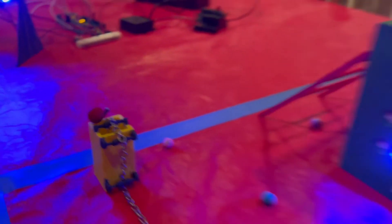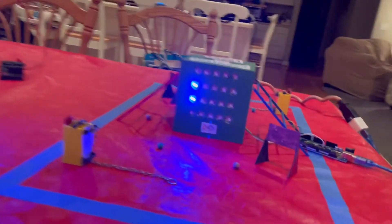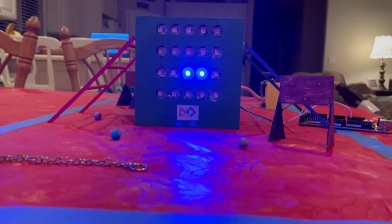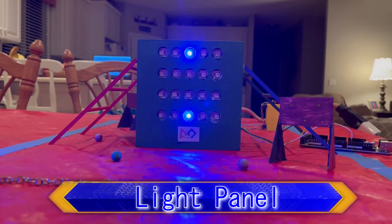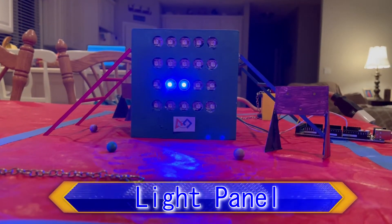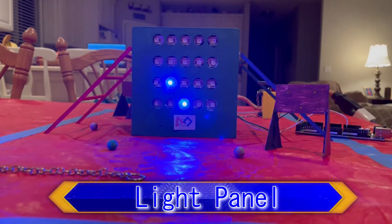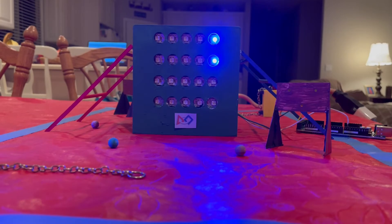Teams may also approach the towering structure in the center of the field known as the light panel. They will have the opportunity to begin the match with four balls preloaded into their bot. During tele-op, these balls may be shot into the four-by-five grid of targets in the middle of the field.